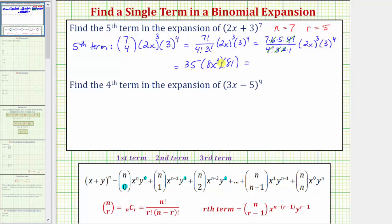Thirty-five times eight times eighty-one equals twenty-two thousand six hundred eighty, and we still have a factor of x to the third. So the fifth term of the expansion is twenty-two thousand six hundred eighty x to the third, where the coefficient is twenty-two thousand six hundred eighty and the variable factor is x to the third.